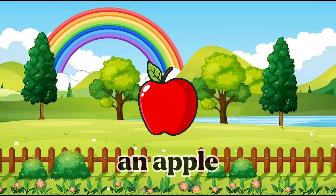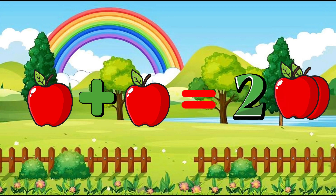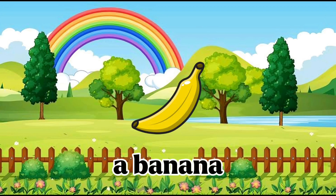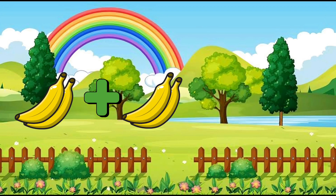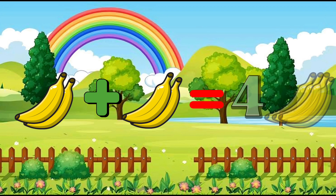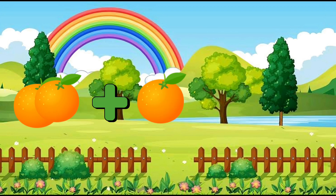An apple: one apple plus one apple equals two apples. A banana: two bananas plus two bananas equals four bananas. An orange: two oranges plus one orange equals three oranges.